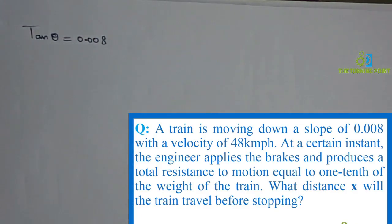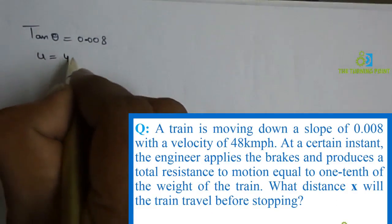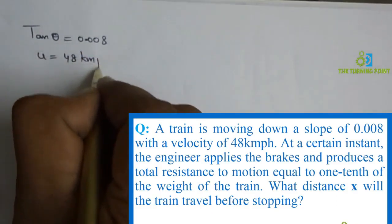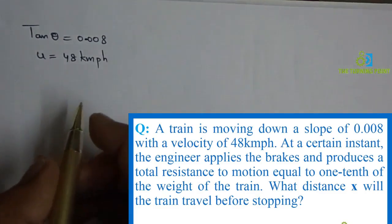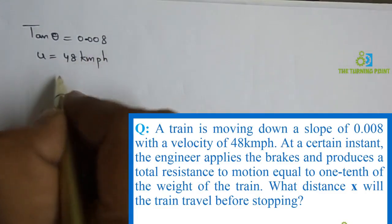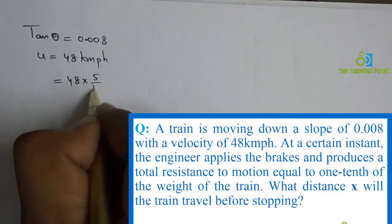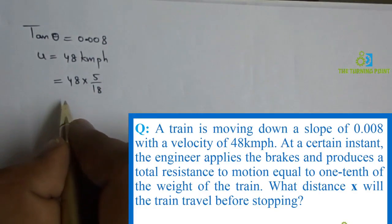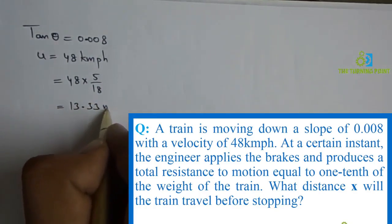With a velocity of 48 km per hour, that is the initial velocity. When I consider the unit in km per hour, convert to m per second: 48 × 5/18, you will get 13.33 m/s.